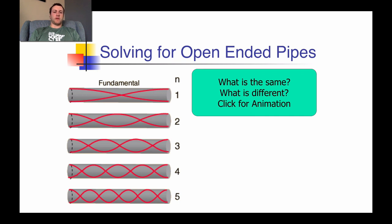For our open-ended pipes, we have our first, second, third, fourth, and fifth harmonics respectively, and our fundamental is again our first harmonic. In an open-ended pipe — that means both ends are open — unlike strings where it was a closed system with nodes at both ends, for an open-ended pipe we're looking at antinodes at both ends because both ends are open.